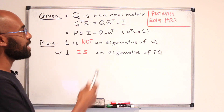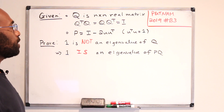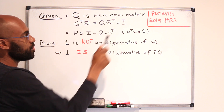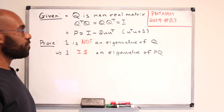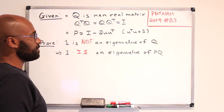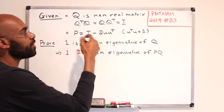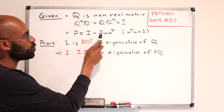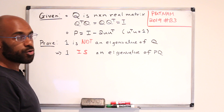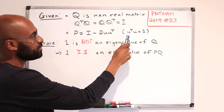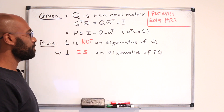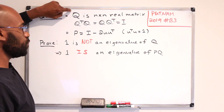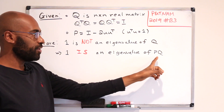Today we're going to discuss Putnam 2019 number B3. This is a linear algebra problem that states the following. If you're given a matrix Q that satisfies Q being orthogonal — meaning Q transpose Q equals Q Q transpose equals the identity — and you have another matrix P that's the identity minus twice U U transpose, where U is a unit vector in R^n (so U transpose U equals 1), the problem asks to prove that if 1 is not an eigenvalue of Q, then 1 must be an eigenvalue of PQ.